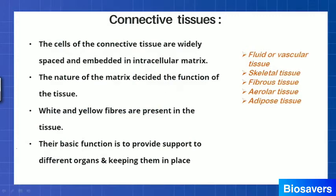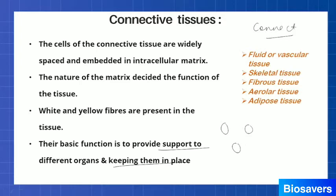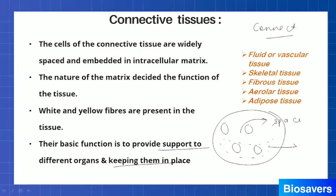The second type of animal tissue is the connective tissue. The word itself says that it connects something. So connective tissue connects the different organs or different parts of the body and helps in providing support and keeping them in their place. The cells are widely spaced, meaning intercellular space is present, and all these cells are present in the matrix.